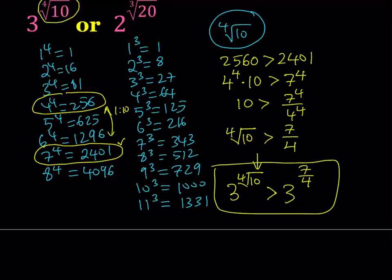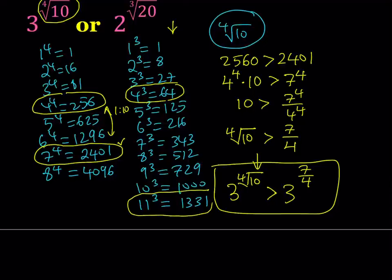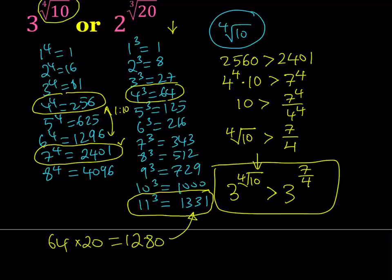Now let's do it with the cubes. I have the cube root of 20, so I'm looking for two numbers on the cubes list in the ratio of roughly 1 to 20. Looking carefully, 64 and 1331 are good candidates — that's why I went all the way to 11. If I multiply 64 times 20, I get 1280, which is pretty close to 11 cubed. Not bad.